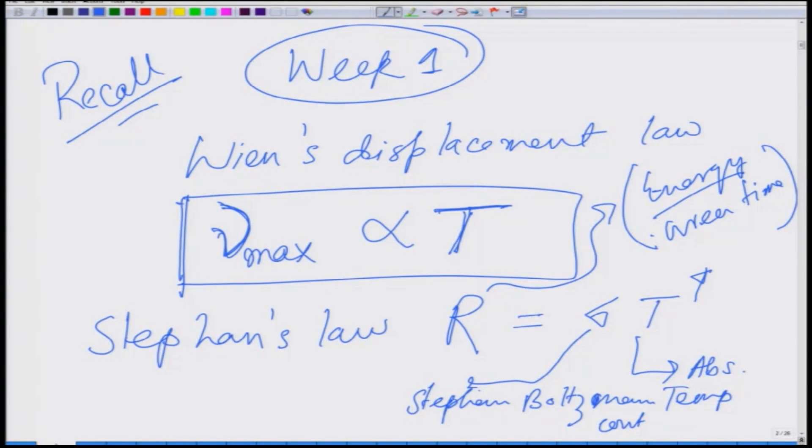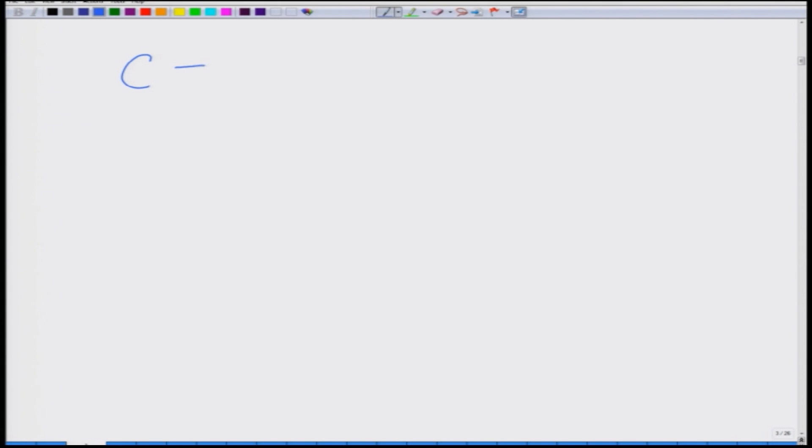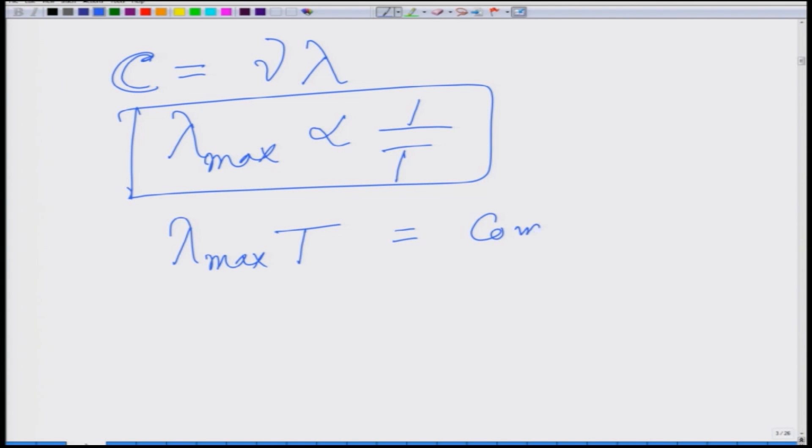If I look at this Wien's displacement law I can immediately see that as c, the velocity of light, is nu lambda, then lambda max should be proportional to 1 over T. So lambda max T equal to a constant which we call the Wien's constant.